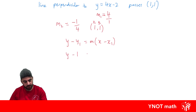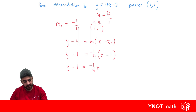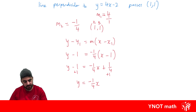Substituting in: y minus 1 equals minus a quarter times (x minus 1). Expanding the right-hand side: minus a quarter times x is minus a quarter x, and minus a quarter times minus 1 gives a positive quarter (because negative times negative is positive). Adding 1 to both sides to put it in y equals mx plus c form, we get y equals minus a quarter x plus 5 over 4.